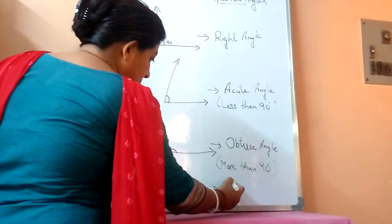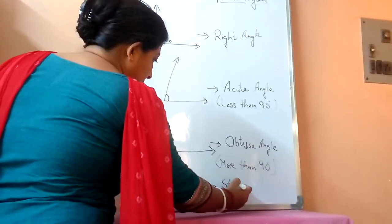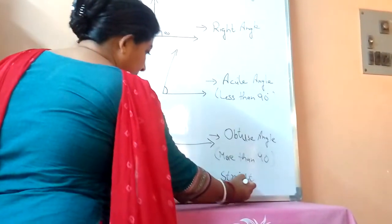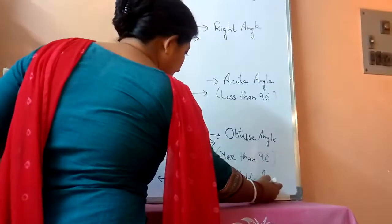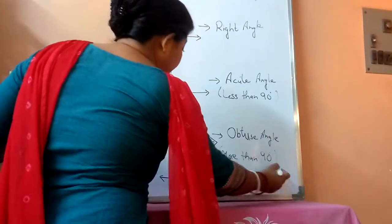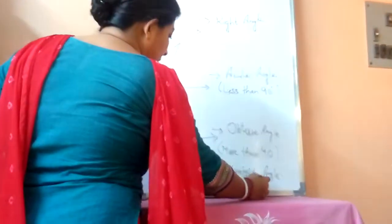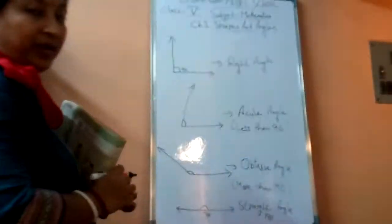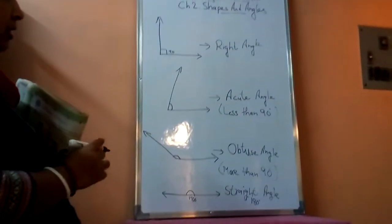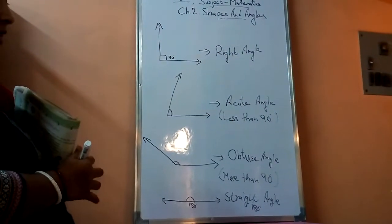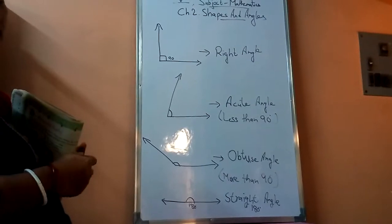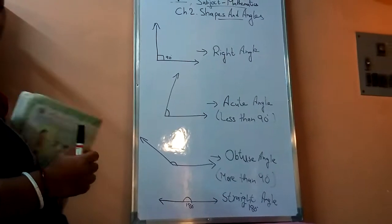It is called straight angle, and its measurement is 180 degrees. So this is the straight angle. So right angle, straight angle, acute angle, obtuse angle — these four angles you will deal with in this chapter.